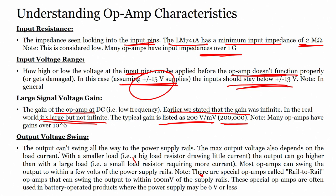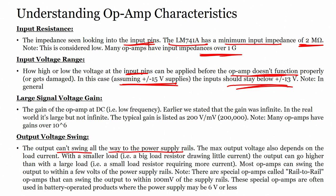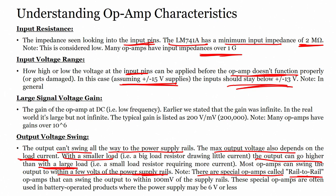Output voltage swing — the output cannot swing all the way to the power supply rails; it cannot go all the way to plus or minus 15 volts. The maximum output voltage also depends on load current — with a smaller load, the output can go higher. Most op-amps can swing to within a few volts of the supply rails. Special rail-to-rail op-amps can swing the output within 100 millivolts and are often used in battery-operated products where the supply may be 6 volts or less.